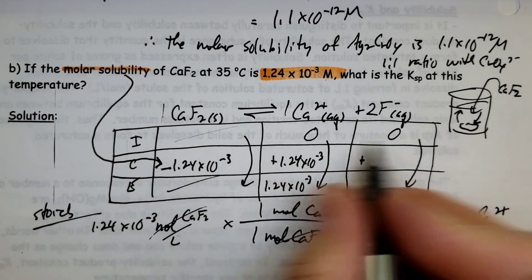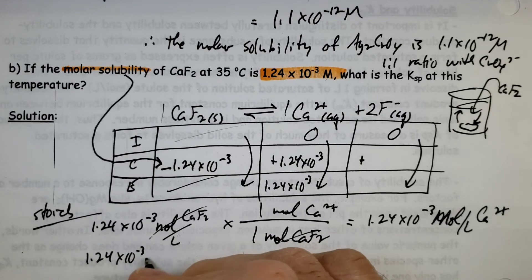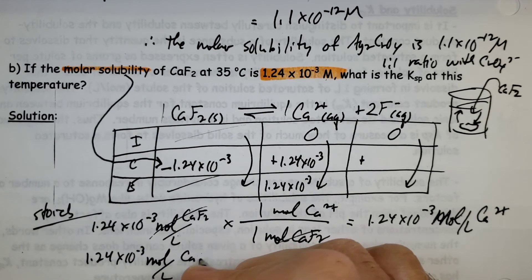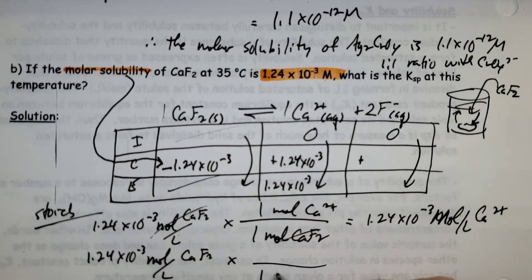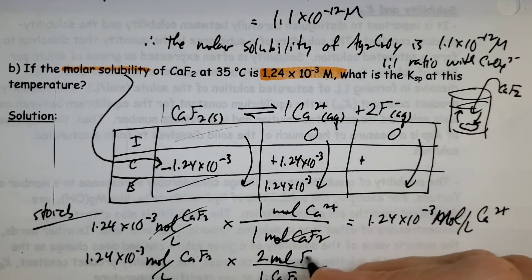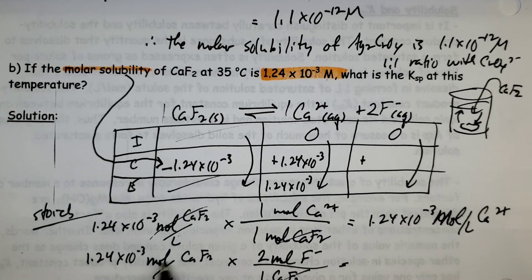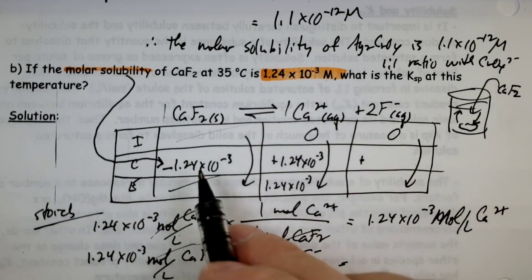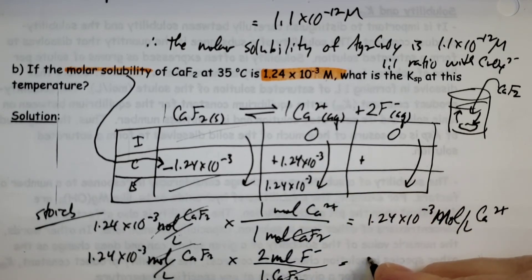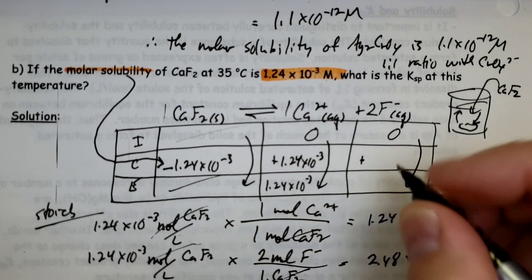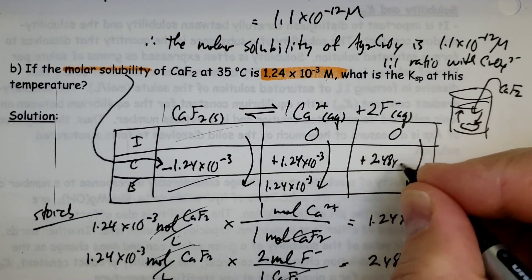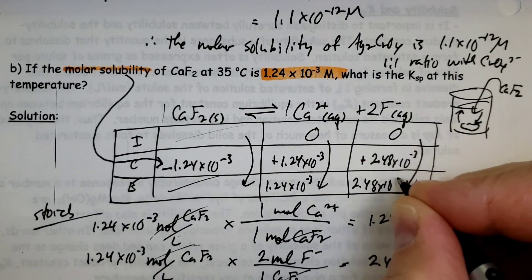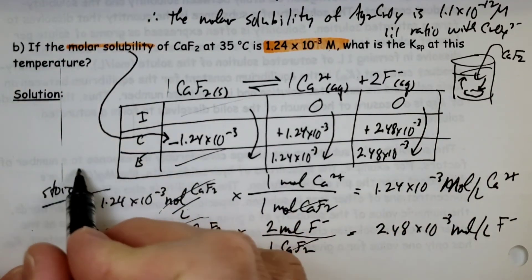If I do the stoich for over here, for every 1.24 times 10 to the minus 3 moles per liter of calcium fluoride, for every one mole of calcium fluoride - forgot the mole there - I produce two moles of fluoride ions. Moles of calcium fluoride, moles of calcium fluoride, so moles per liter of fluoride. You can see it's going to be 1, 1, 2, 1.24, 1.24, 2.48, because it's doubled. So 2.48 times 10 to the minus 3. There we go. Now I have my equilibrium amount.